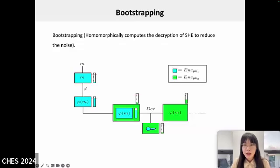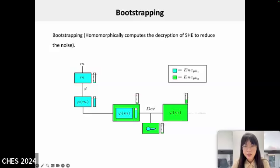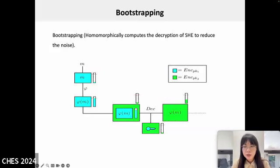When a message is first encrypted, the noise level is relatively low. However, as homomorphic operations are performed, the noise gradually accumulates. Once the noise surpasses a certain threshold, the ciphertext can no longer be correctly decrypted. Therefore, it is essential to employ a technique that can reduce the noise within the ciphertexts, allowing homomorphic operations to continue indefinitely. This technique is known as bootstrapping. Currently, bootstrapping is the only method available for achieving fully homomorphic encryption. It effectively refreshes the noise in the ciphertext, enabling further homomorphic computations. The essence of bootstrapping is to homomorphically compute the decryption function. However, bootstrapping is computationally expensive, and improving its efficiency is a critical research challenge.